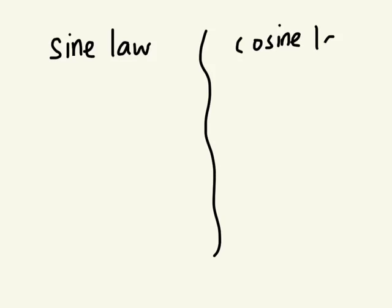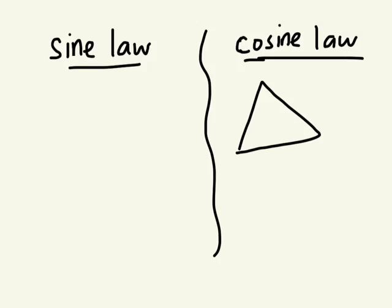We need to know when to use sine law and when to use cosine law. So let's review that now. First of all, obviously, it cannot be a right-angled triangle. It has to be an acute triangle. If we have three side lengths given and no angles, you'd use cosine law.